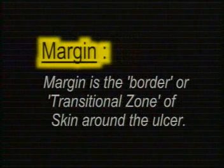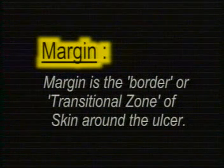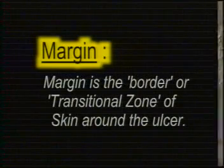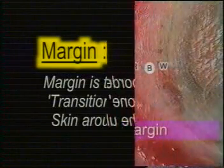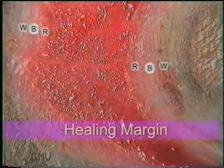Next, inspect the margin and the edge of the ulcer. The margin is the skin border or transitional zone of skin around the ulcer — that is, the line demarcating the ulcer from the intact skin. There are three types of margin.